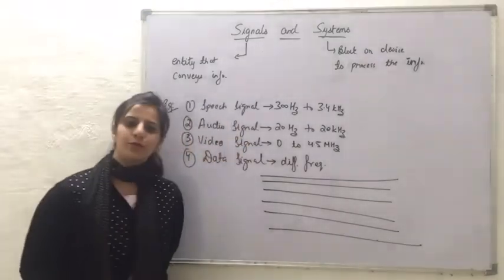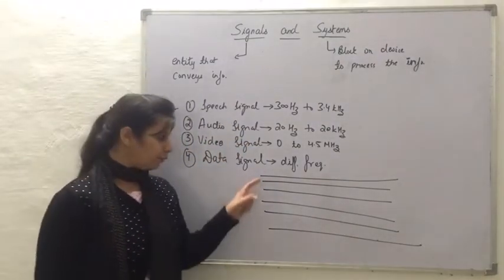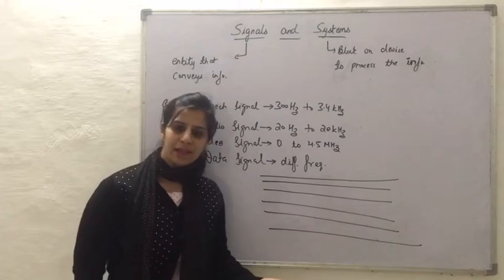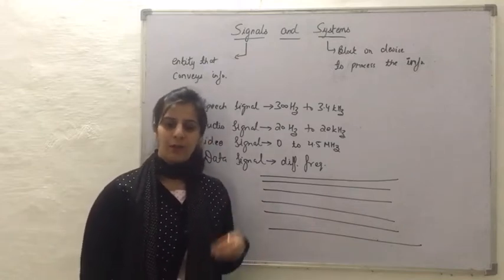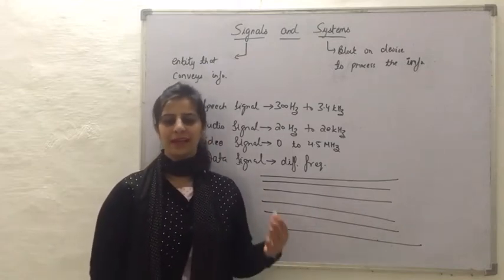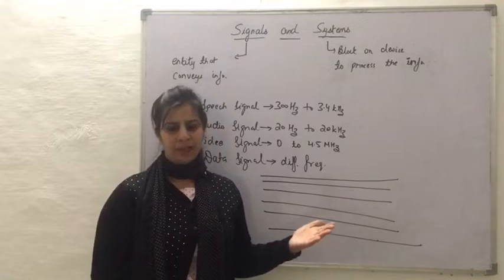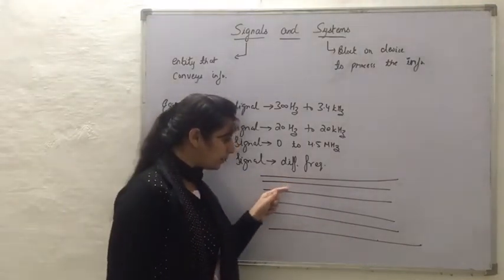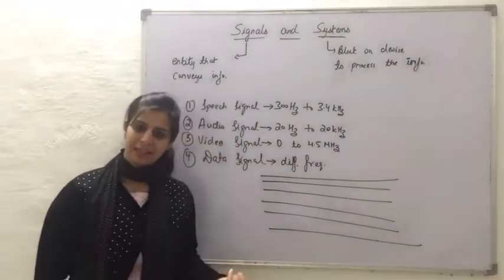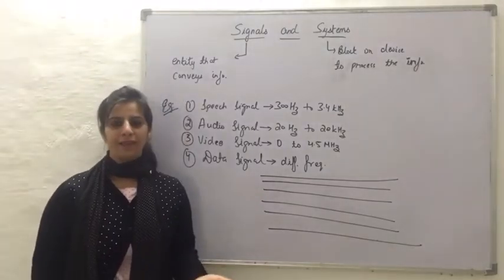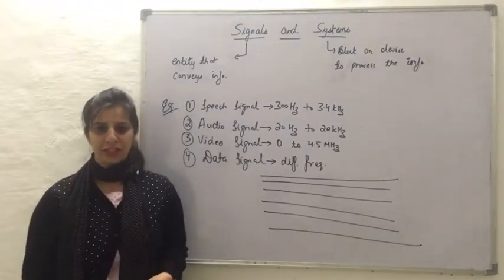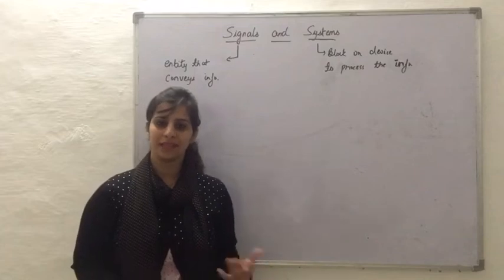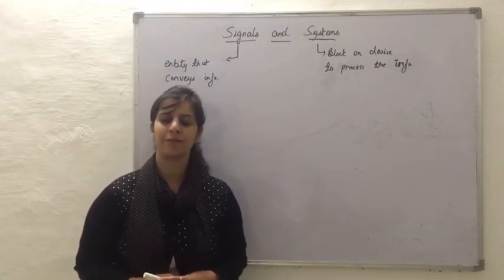When a vehicle is moving on a road, it moves in a particular lane. Similarly, when data is moving or when we are transmitting data from one place to another, the data will be transmitted in certain particular lanes, and those lanes or pathways for the information are called as channels. So let's try to understand how a signal can be represented mathematically.